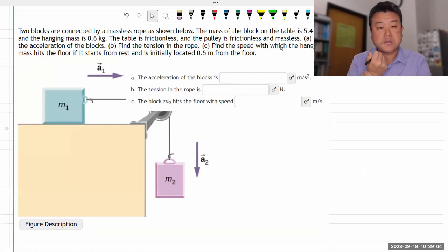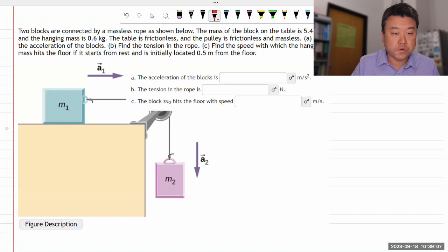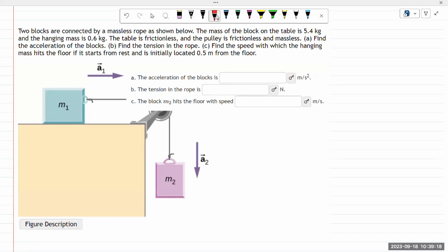Let me do this question. It says two blocks are connected by a massless rope as shown below over a pulley. The mass of the block on the table is 5.4 kilograms, so m1 is 5.4 kilograms, and the hanging mass is 0.6 kilograms. The table is frictionless, the pulley is frictionless and massless. It says find the acceleration of the blocks, the tension in the rope, and the speed with which the hanging mass hits the floor.